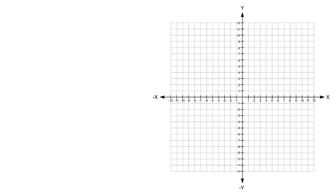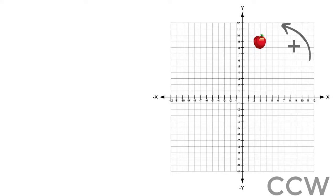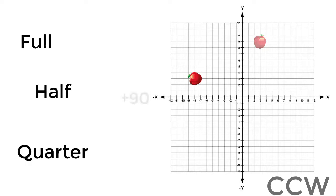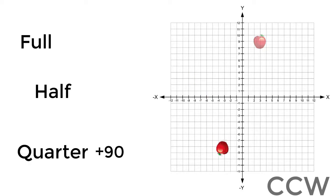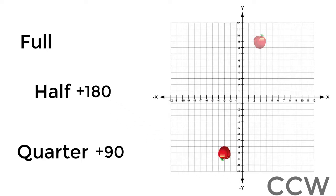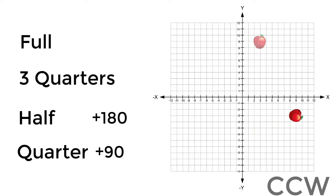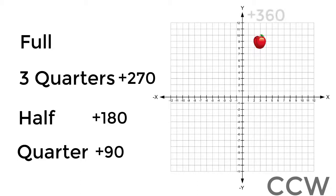Let's take an example. If we move an object in the positive direction, which is the counterclockwise movement: a quarter turn is a 90-degree rotation, a half turn is a 180-degree rotation, and three quarters of a turn is a 270-degree rotation.